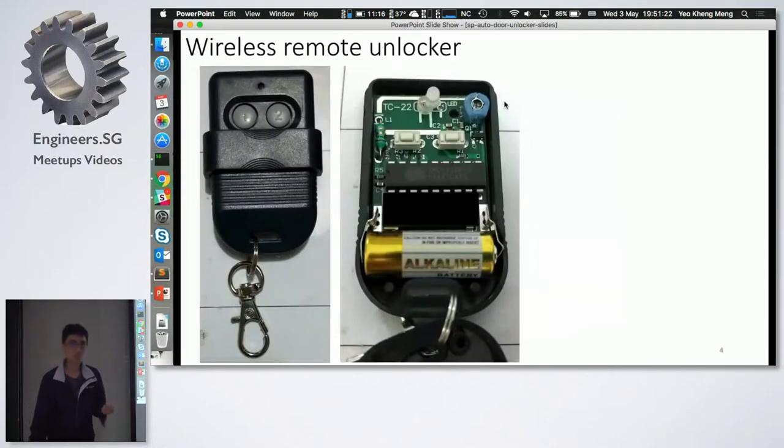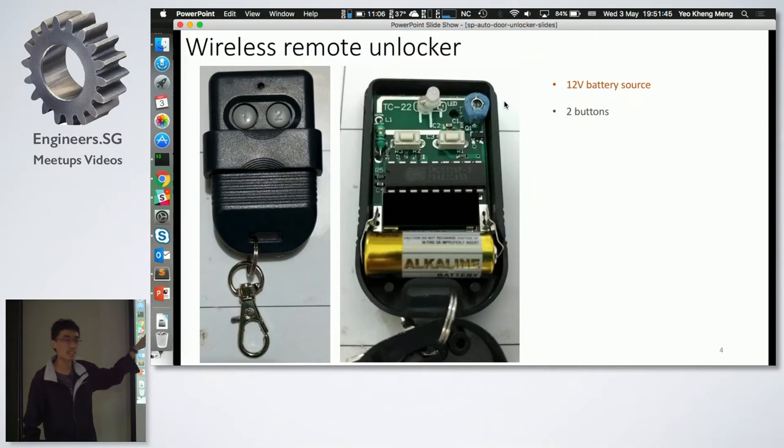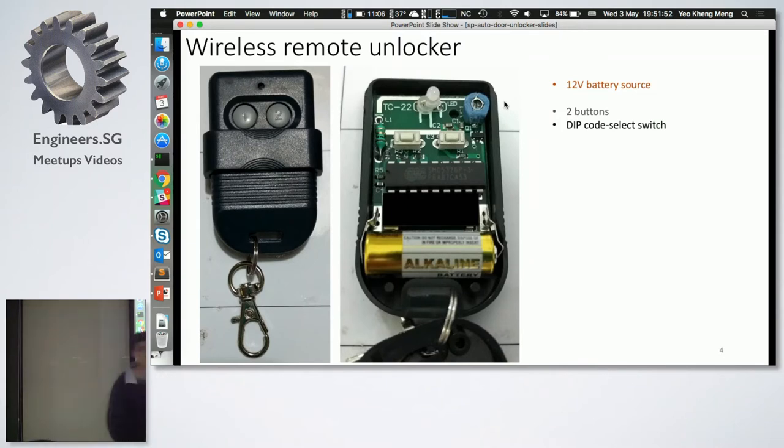So let me go to the wireless remote. Other than tapping our pass out, the only other way of opening the door, of unlocking the door, is through this door remote. We have three of them. The contractors gave them to us. I thought is there a way to remotely trigger this door remote? So I open it up. I decided to see what's inside. So it's powered by a 12 volt battery. It has two buttons. Pressing any of these two buttons will unlock the door.